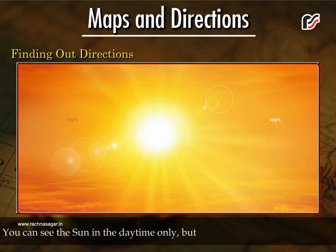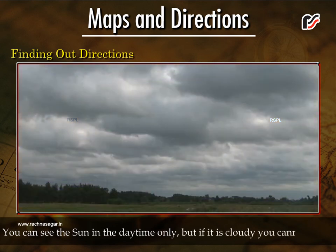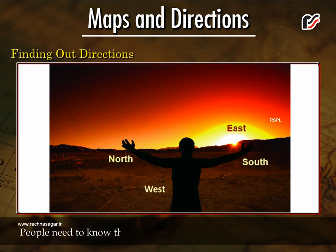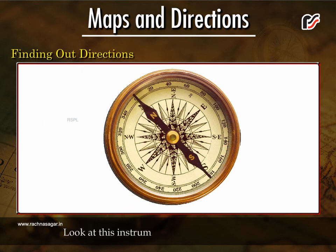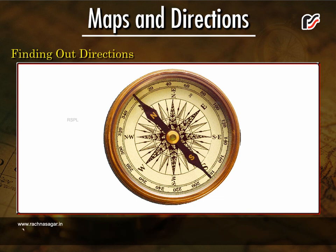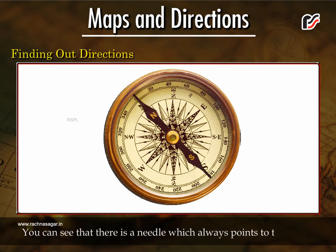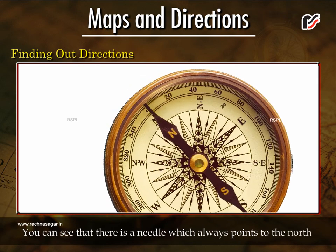You can see the sun in the daytime only. But if it is cloudy, you cannot see it. People need to know the directions at other times of the day as well. Look at this instrument — it is called the compass.